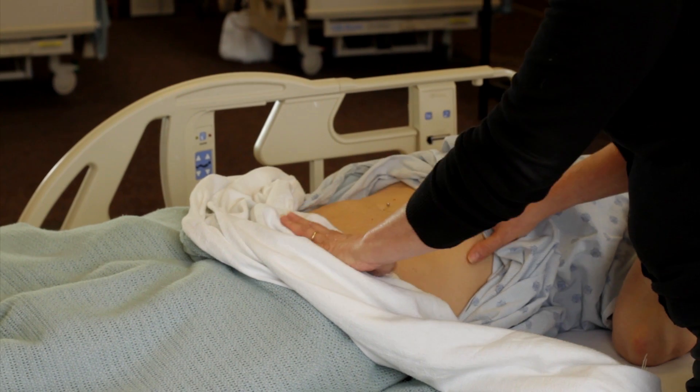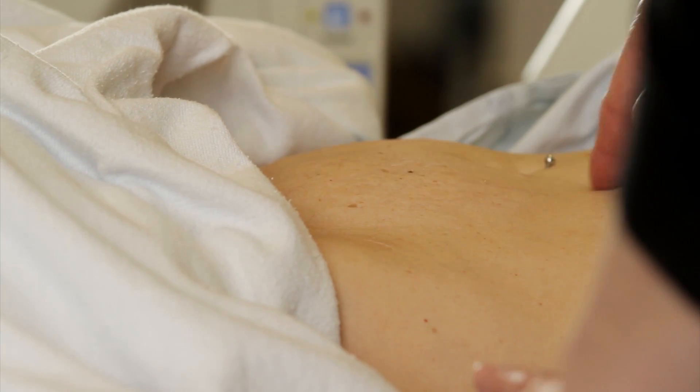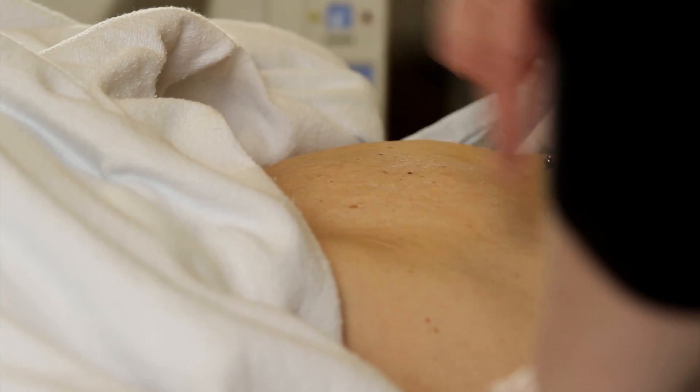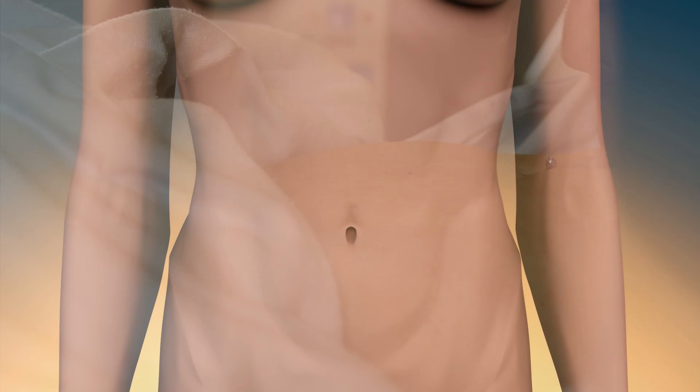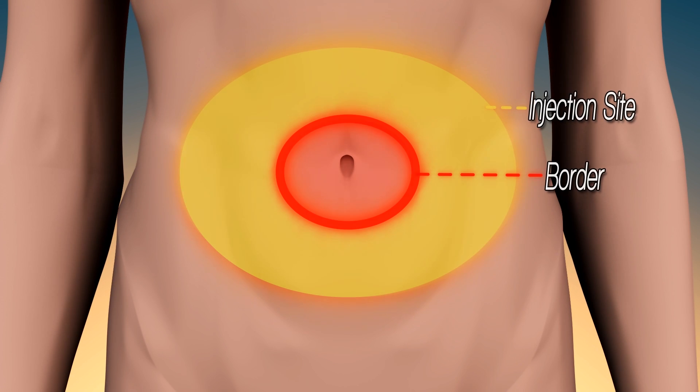Assess the abdomen for sub-Q injection by measuring one inch away from the umbilicus, staying on the anterolateral and posterolateral sides of the abdomen.